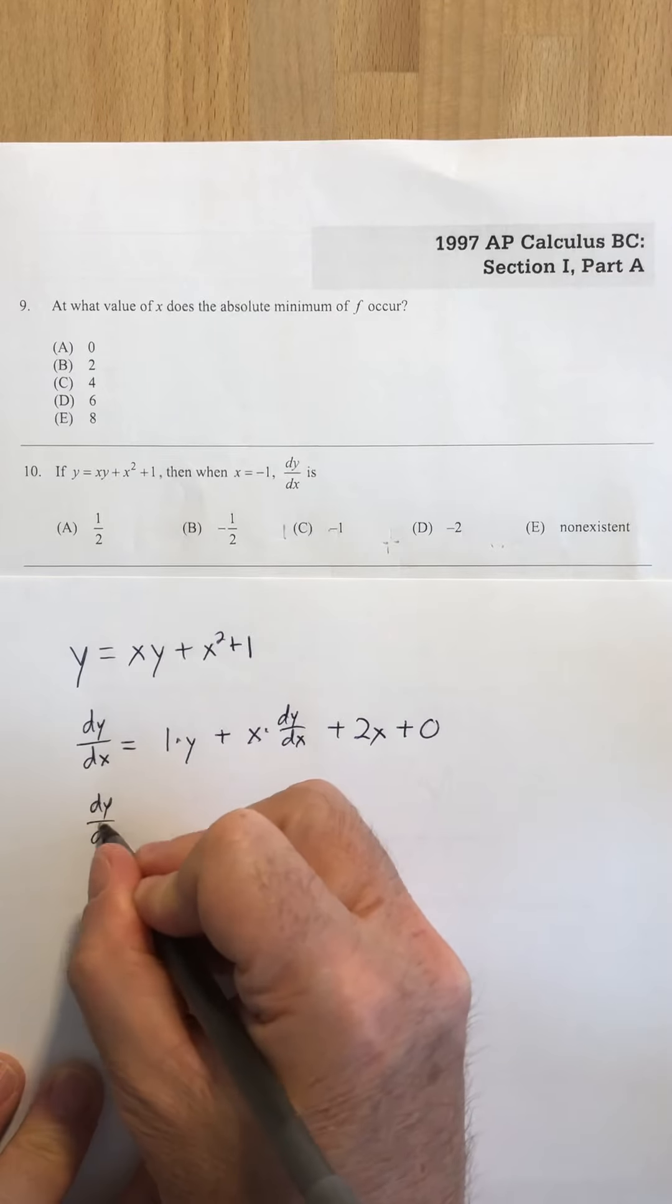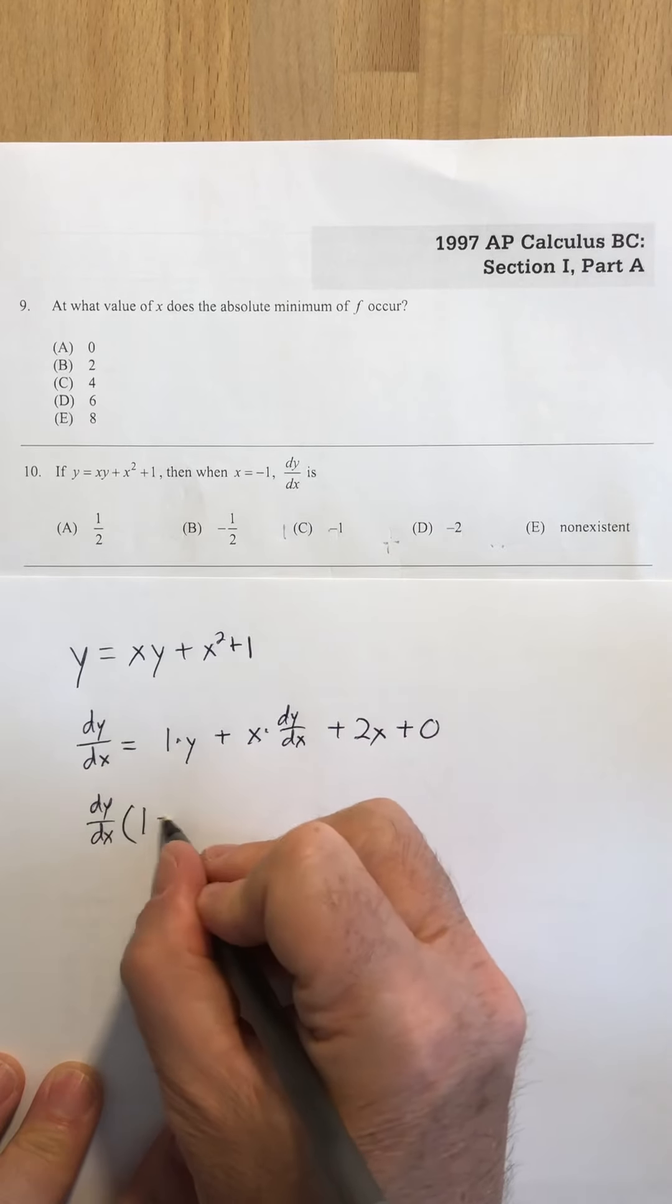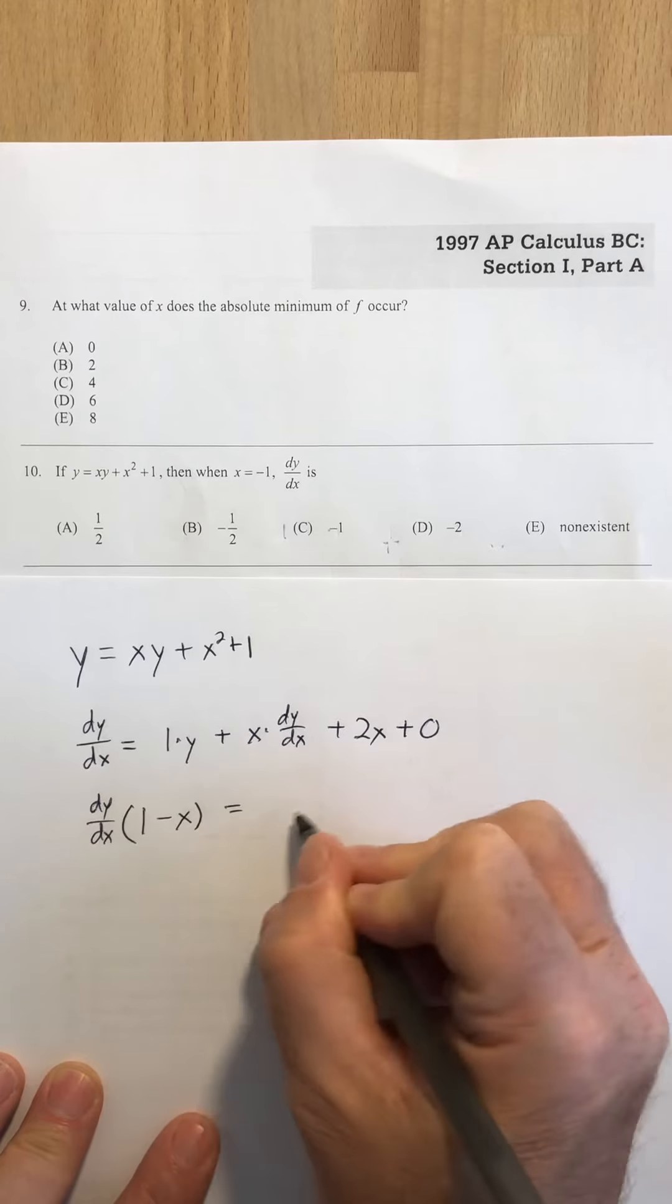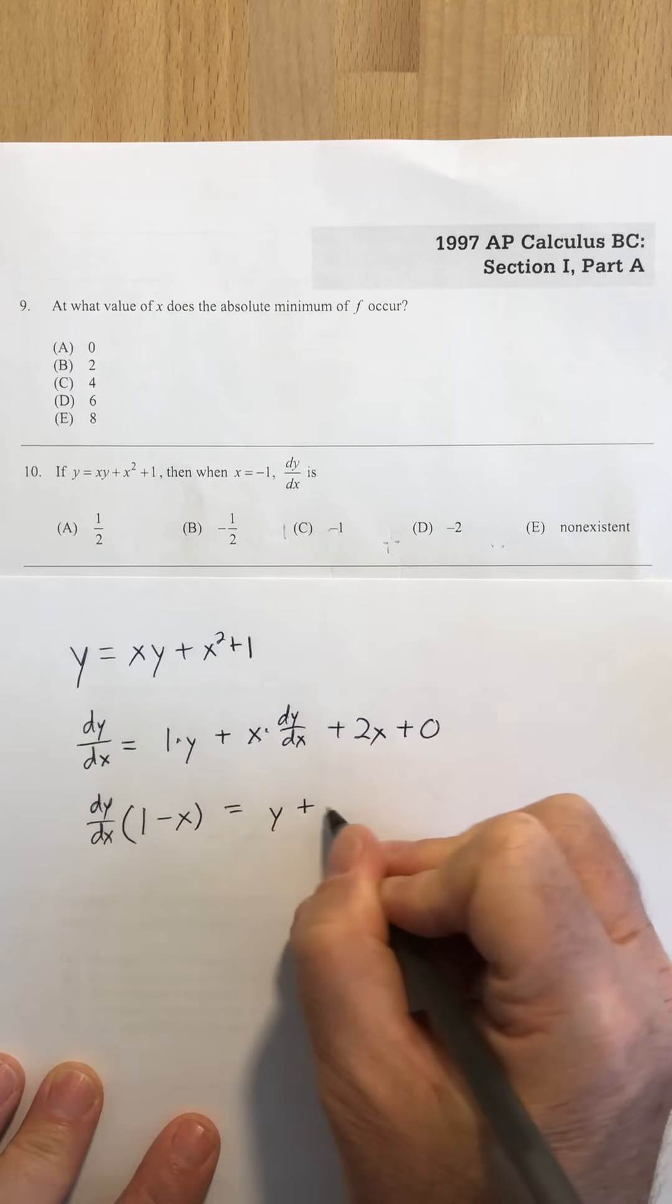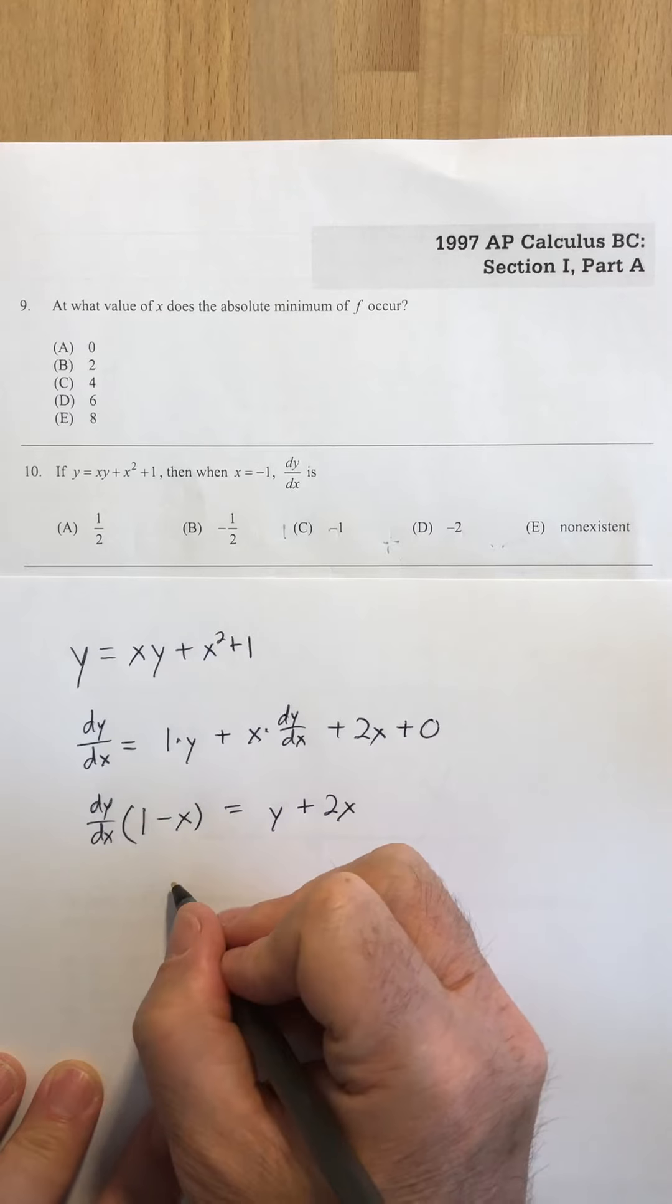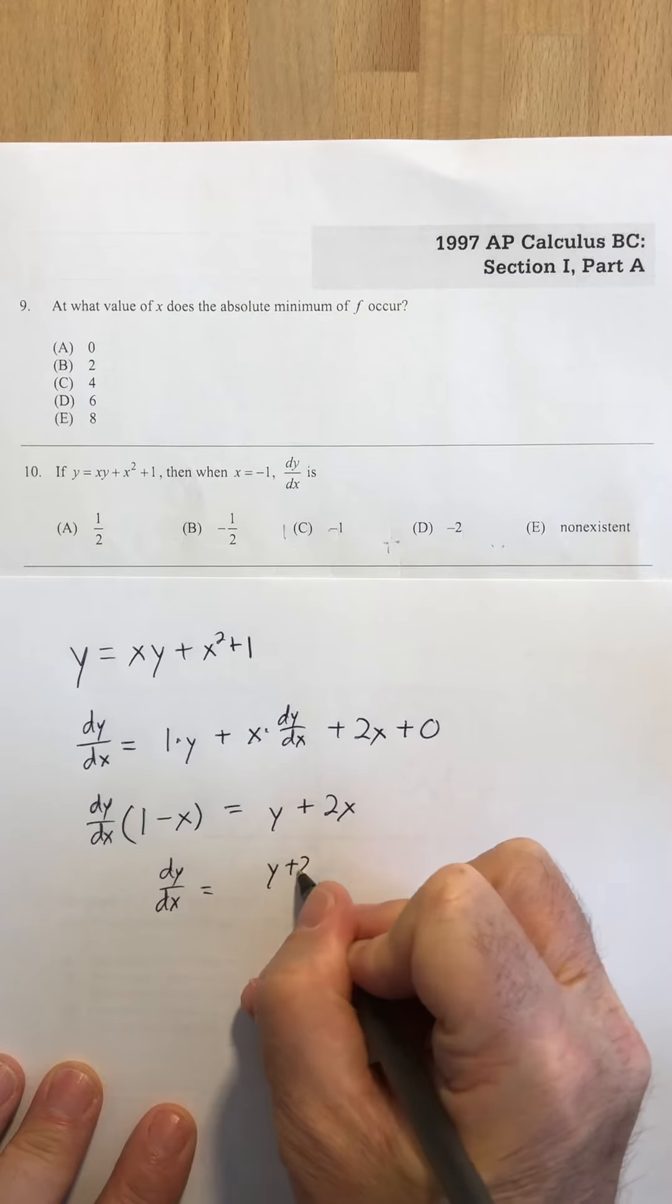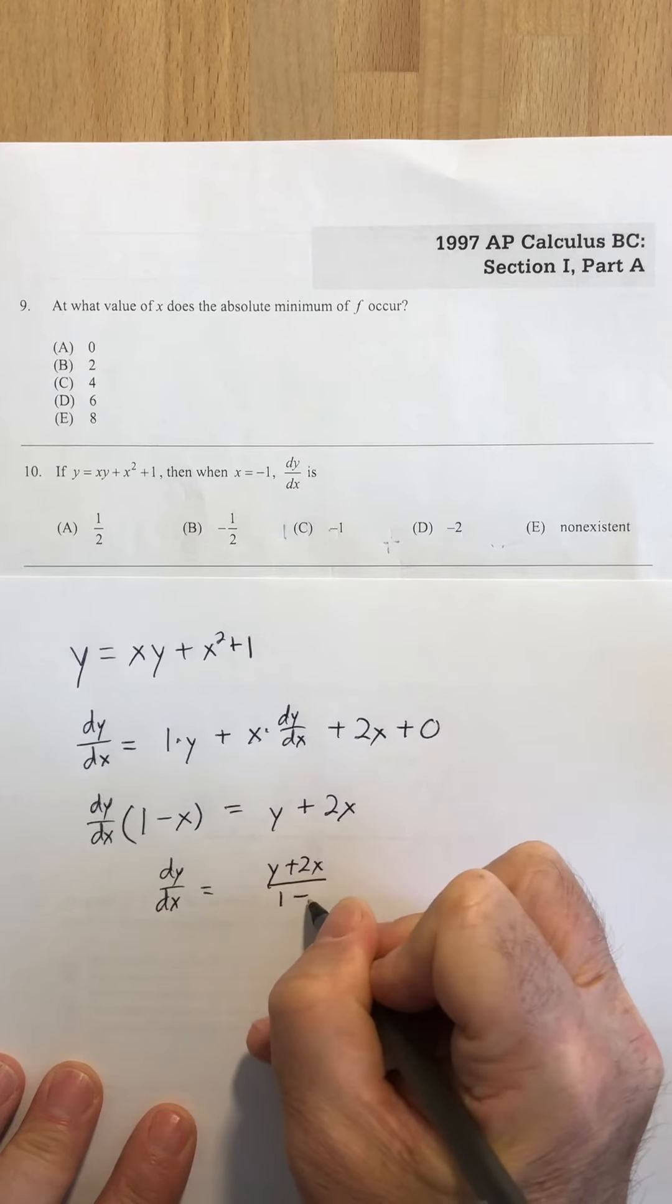If I move my dy dx's to the same side, I'm going to get 1, and this term will be minus x, and that's equal to y plus 2x. And finally, dy dx equals y plus 2x over 1 minus x.